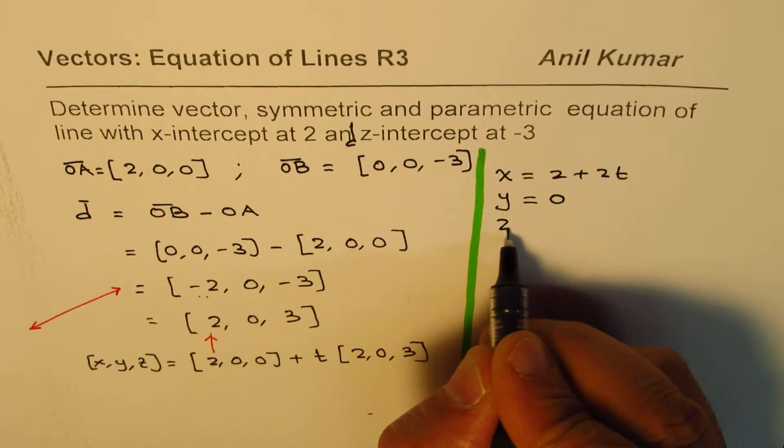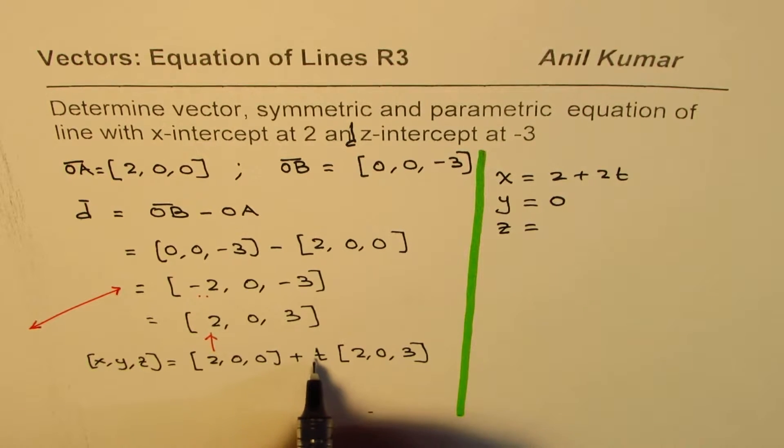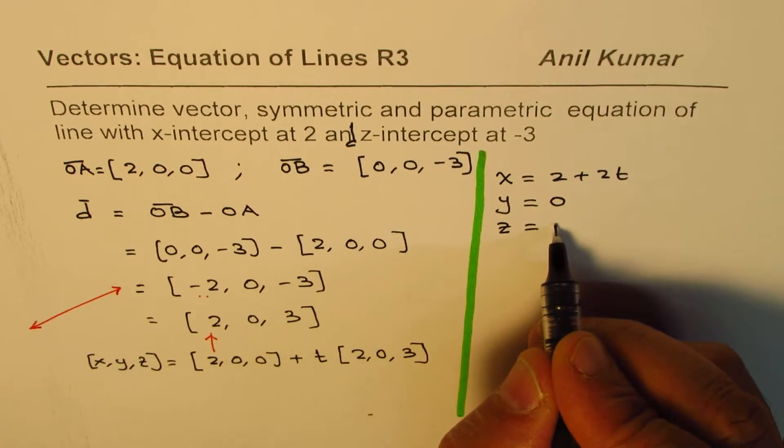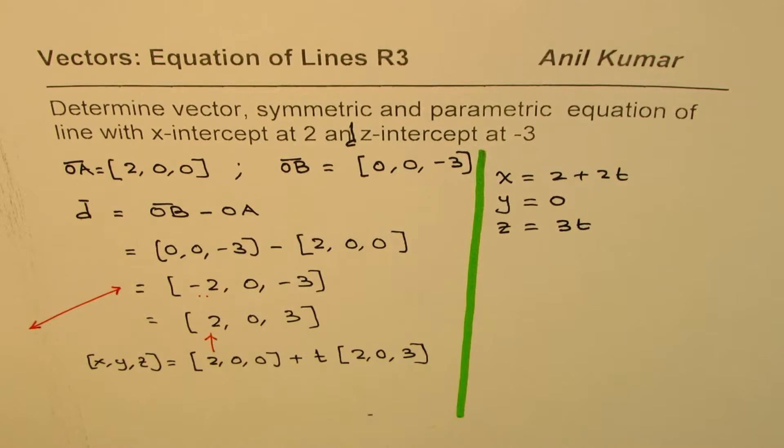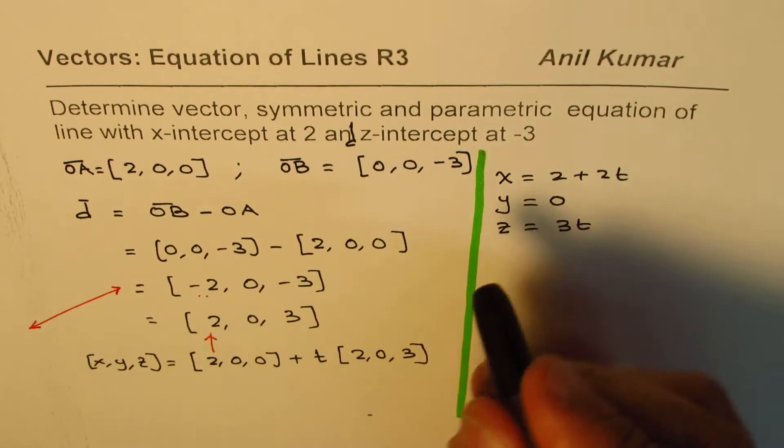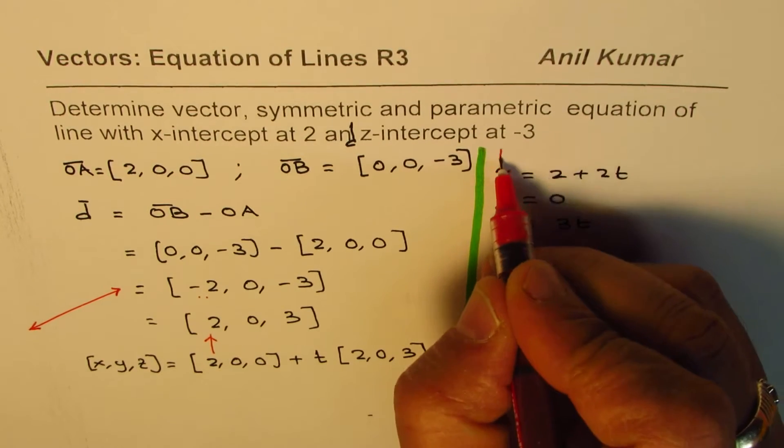and as far as z is concerned, it is 0 plus 3t. So, I could write this as 3t. So, that becomes the parametric equation, right? So, let me write parametric equation here.